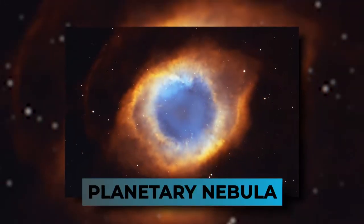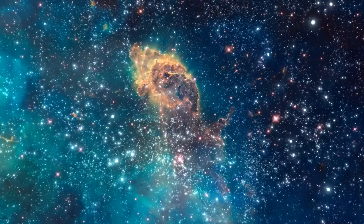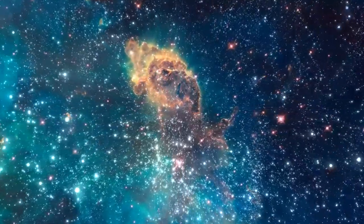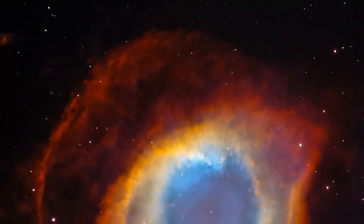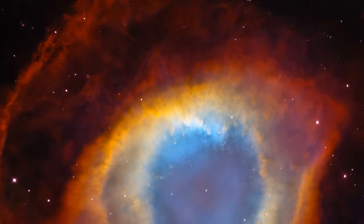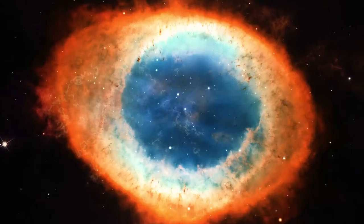Second, planetary nebulae. There are two kinds of nebulae that don't have stars making themselves. Instead, they are made of material from stars that have died and sent their stuff out into space. Planetary nebulae and supernova remnants are the two types of stellar remnant nebulae.